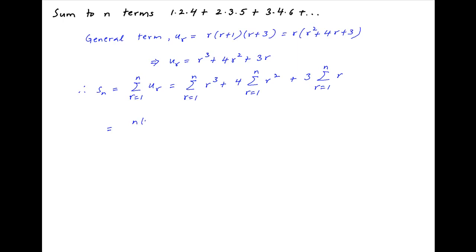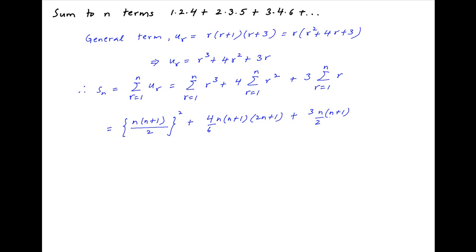This is equal to the summation of r³, which is [n(n+1)/2]² plus 4 times the summation of r², which is n(n+1)(2n+1)/6, plus 3 times the summation of r, which is n(n+1)/2.